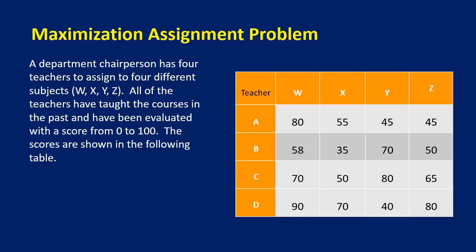Hi everyone, this is Dr. Diana Song. In today's lesson we are going to talk about maximization assignment problems. In our previous videos we had assignment problems, but those were minimization assignment problems. The difference here is we want a maximization assignment problem. A department chairperson has four teachers to assign to four different subjects W, X, Y, and Z. All teachers have taught the courses in the past and have been evaluated with a score from zero to 100. We want to assign each teacher to the course where they got the maximum grade.